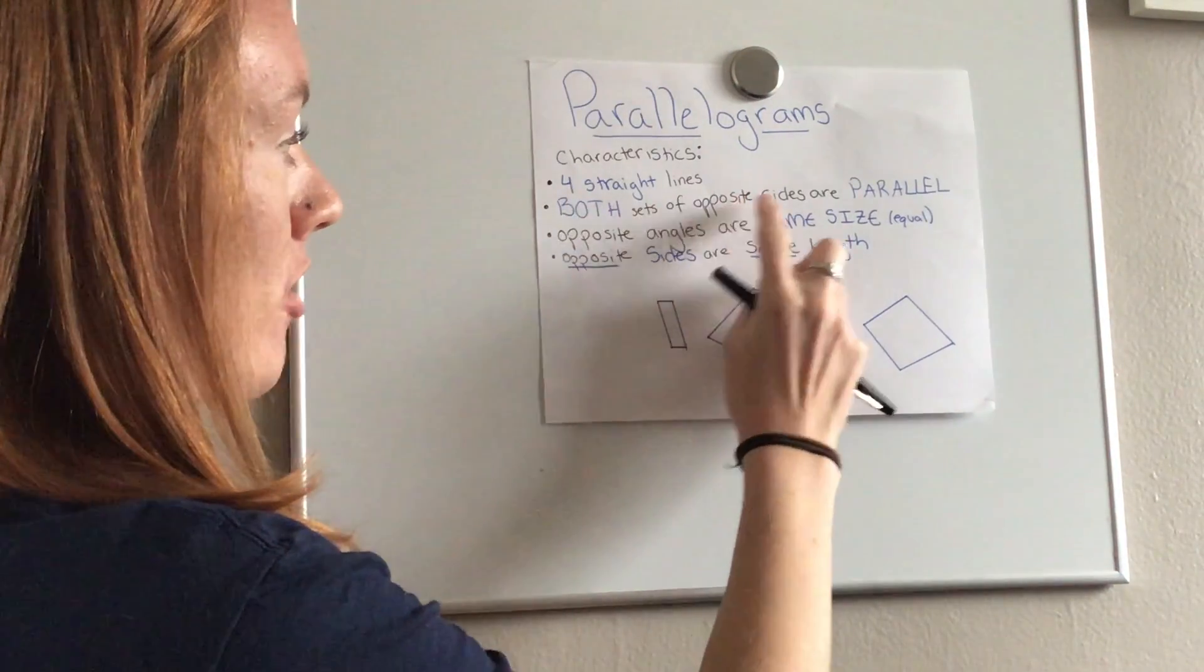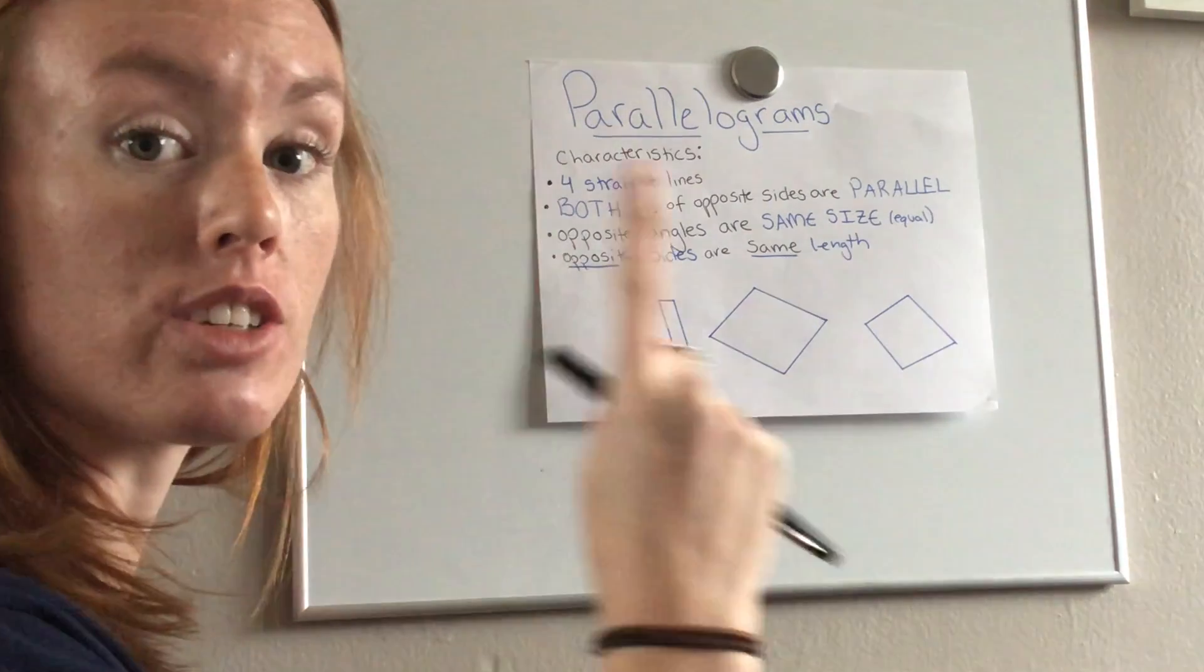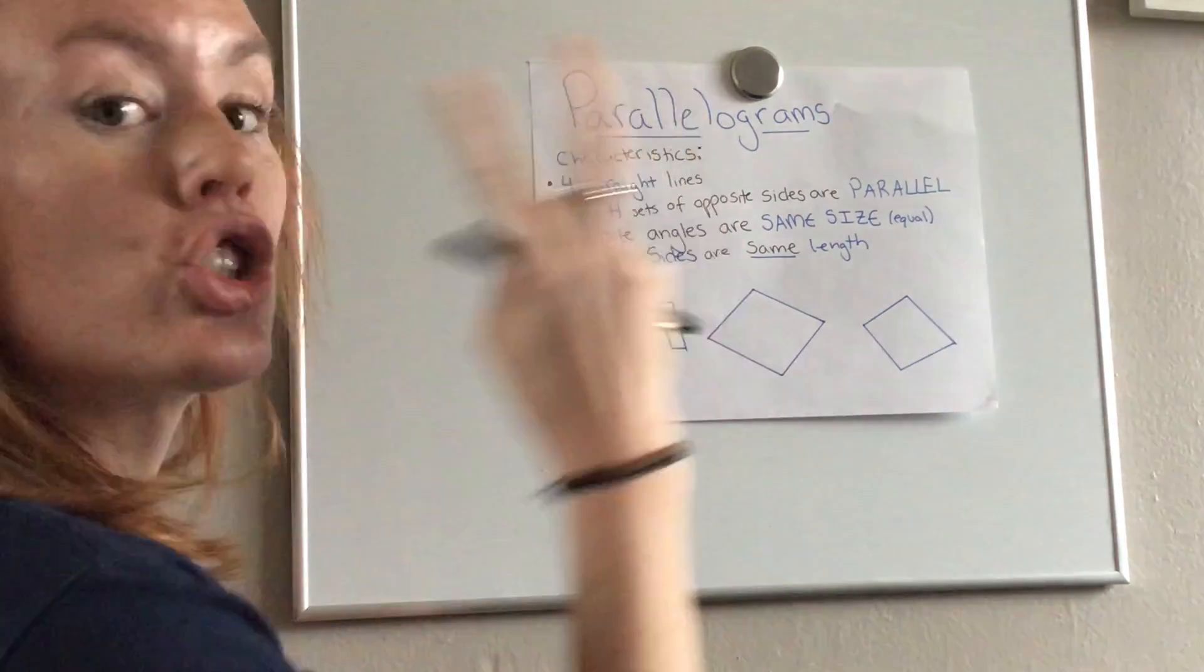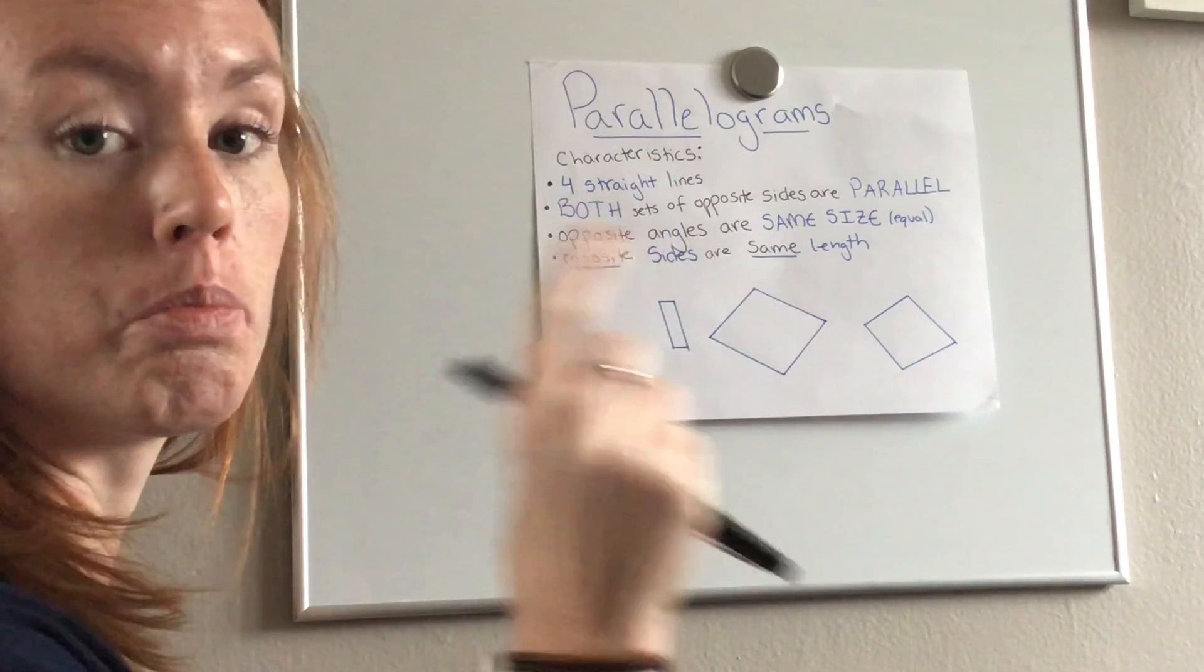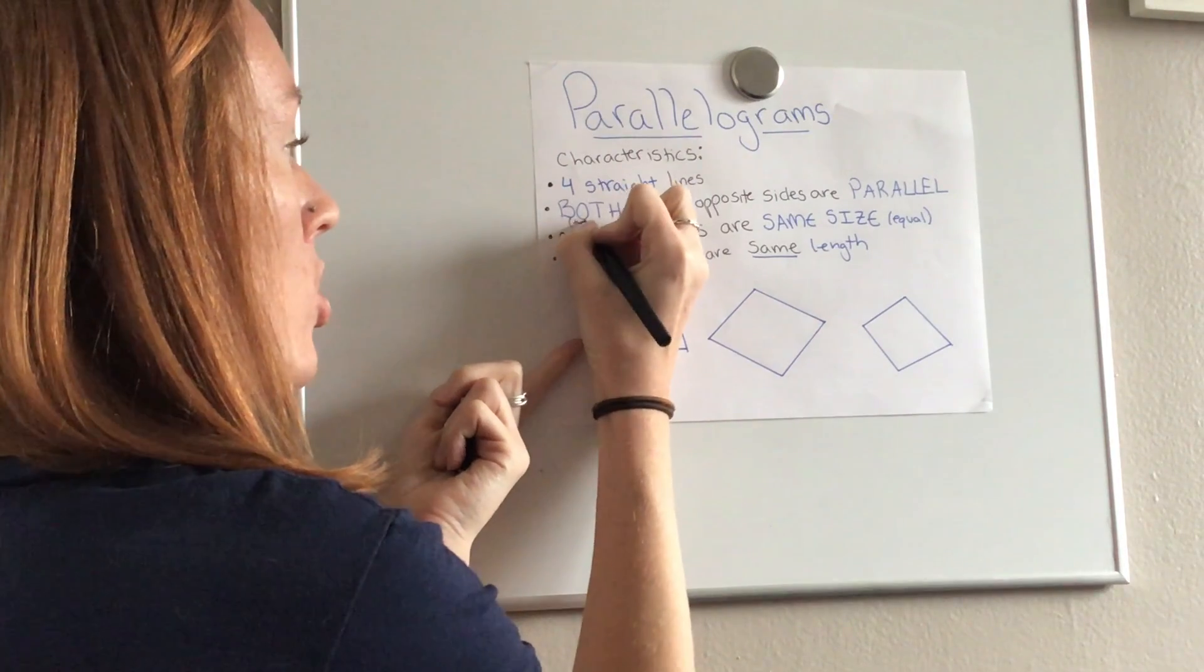Both sets of opposite sides are parallel. So unlike the trapezoid which just needed one, parallelogram needs two sets, or both sets of parallel lines. I'll add the two in there.